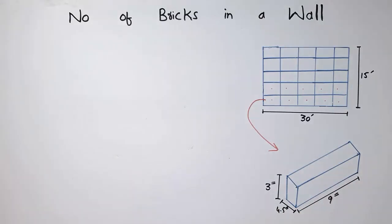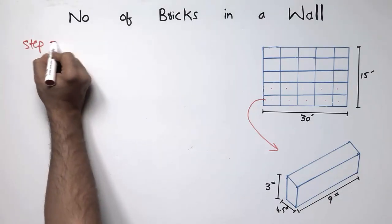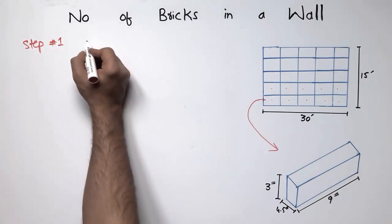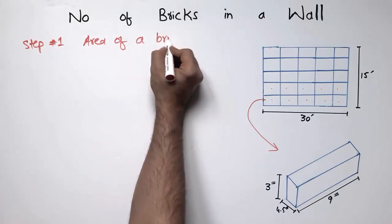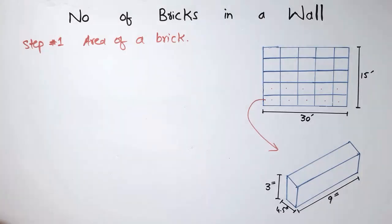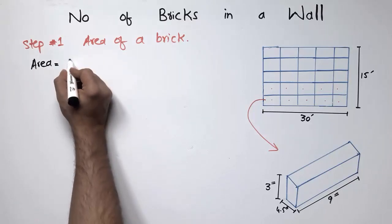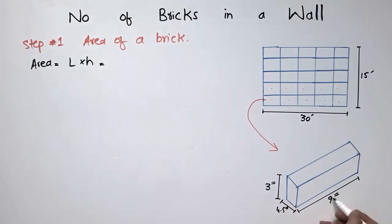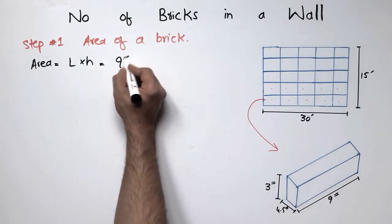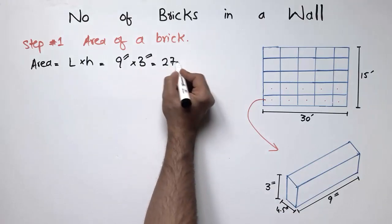To start with the calculation, the first step is to find the area of a single brick. The area of this brick is equal to length multiplied by height. The length is 9 inches and the height is 3 inches, which gives us 27 inches squared. This is the area of the brick.